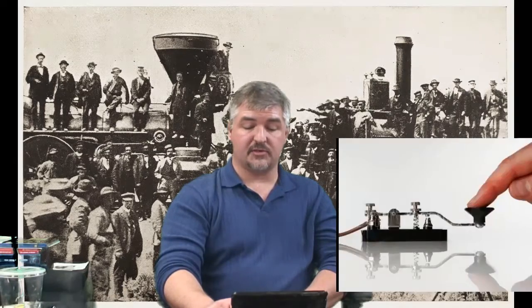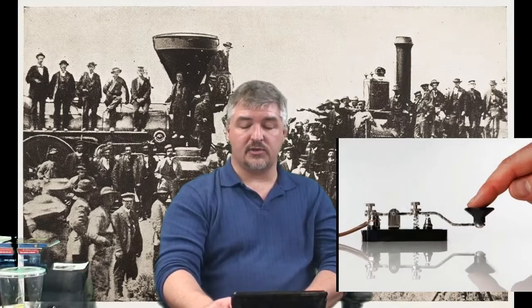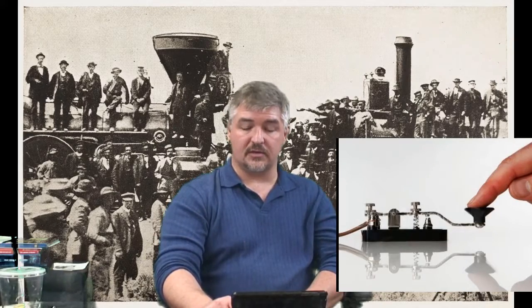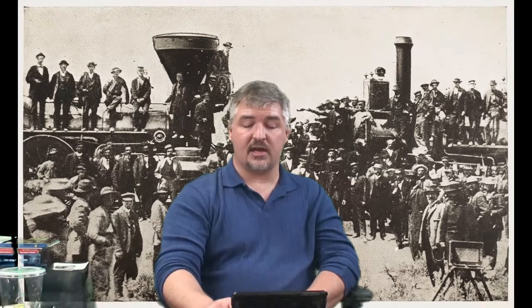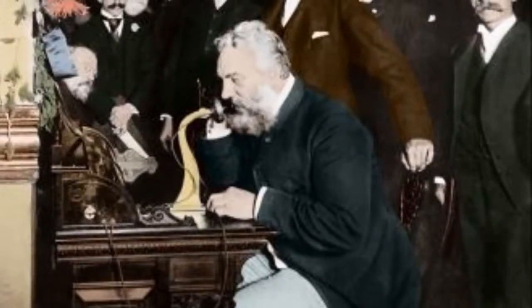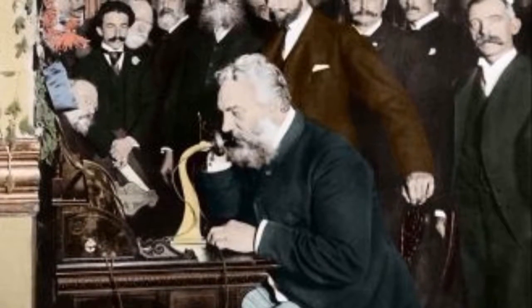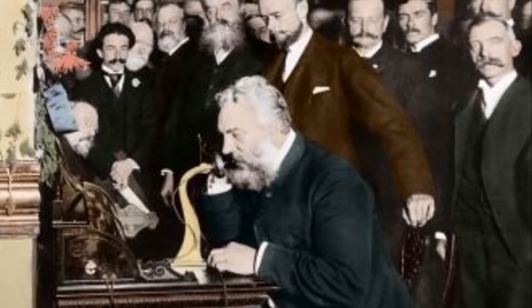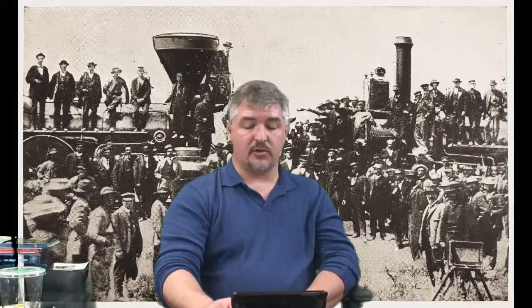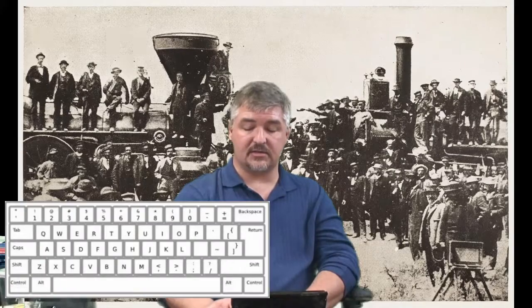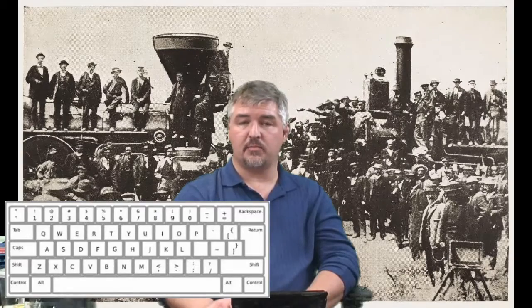In 1837, Samuel F.B. Morse developed a method of sending messages instantly over electric wires using a code of long and short signals, which would become known as Morse code. The telegraph wires were strung alongside railroads, and railroad stations had telegraph offices. Alexander Graham Bell was the first to patent the telephone in 1876. By 1900, there were more than a million telephones in use. Christopher Latham Sholes developed the first practical typewriter in 1867, and it improved with the keyboard layout that is still in use on computers today.